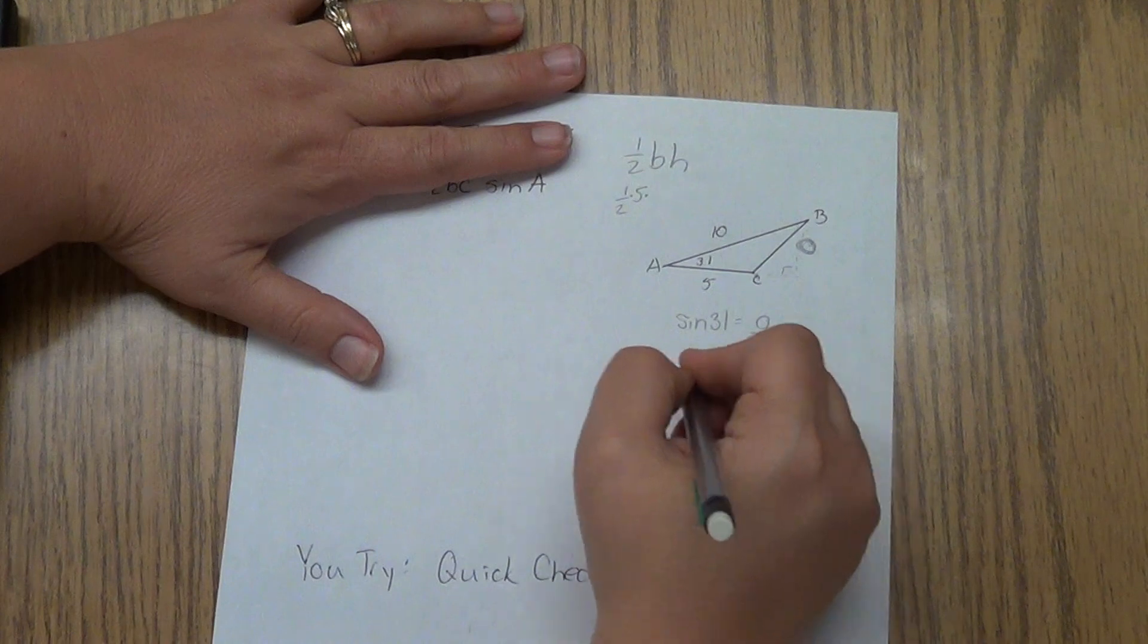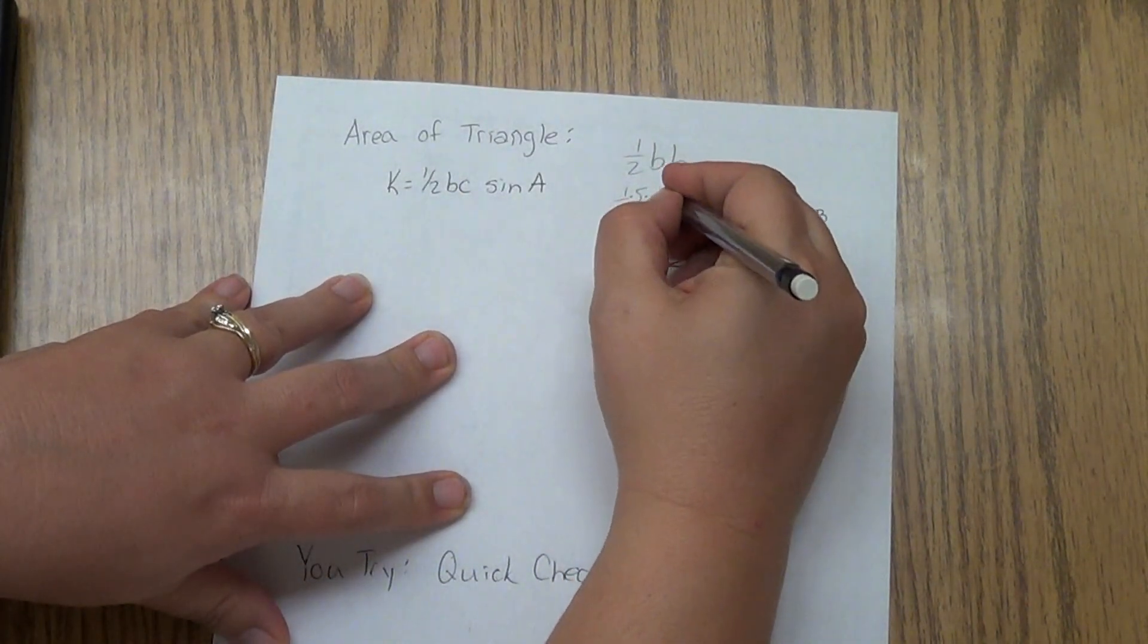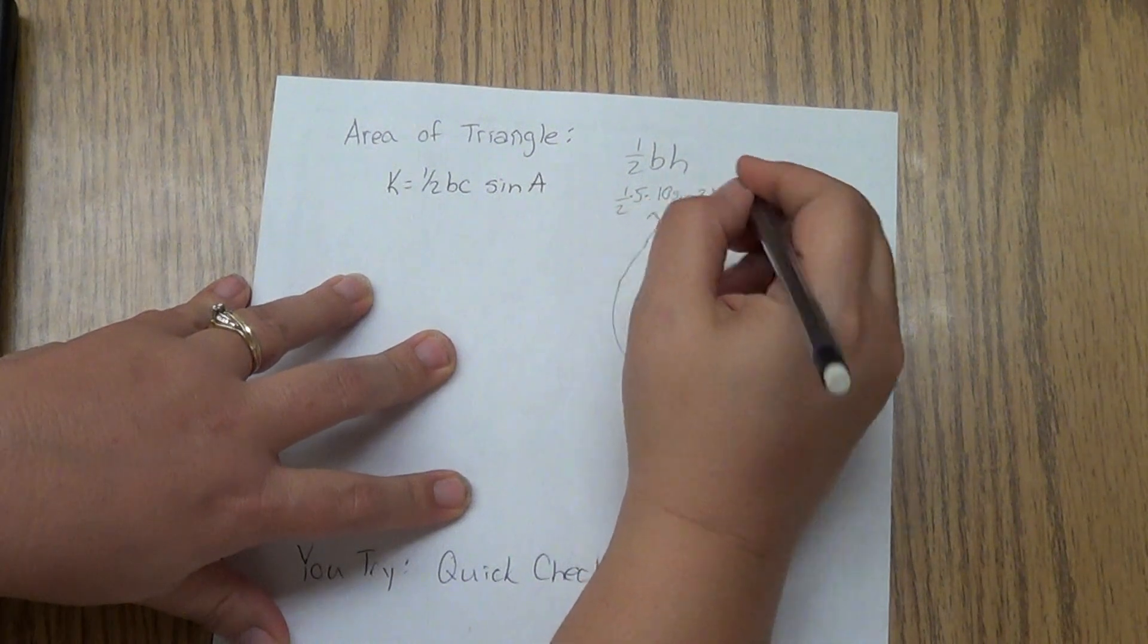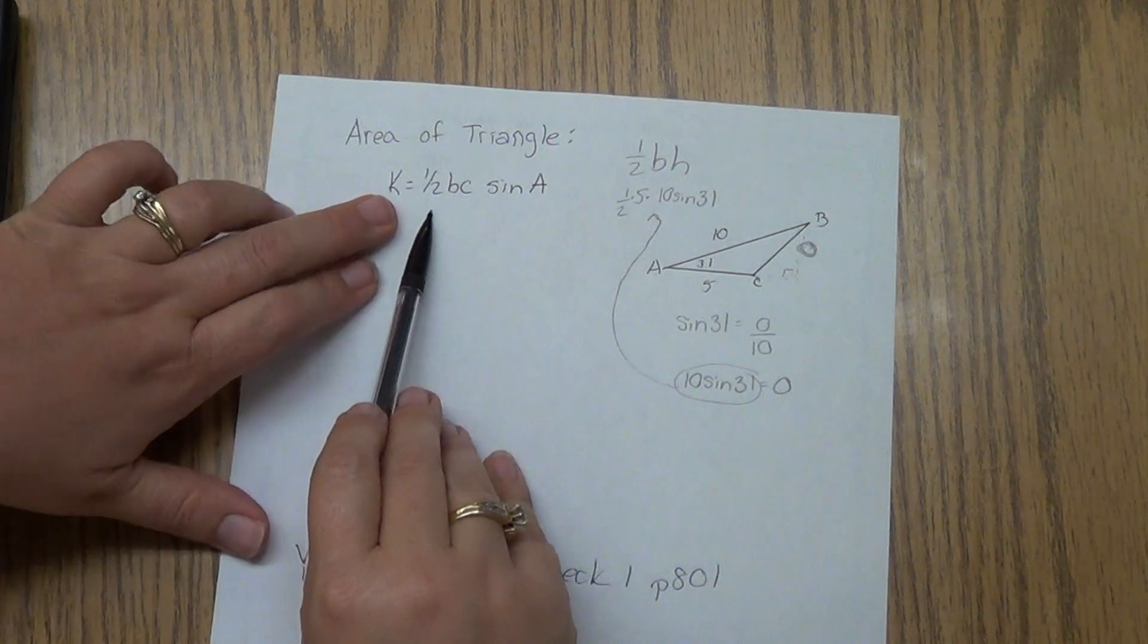So you take that 10 sine of 31 and you put it in there for the height. And there you could find the area of a triangle. Well, let's look at what happened over here.